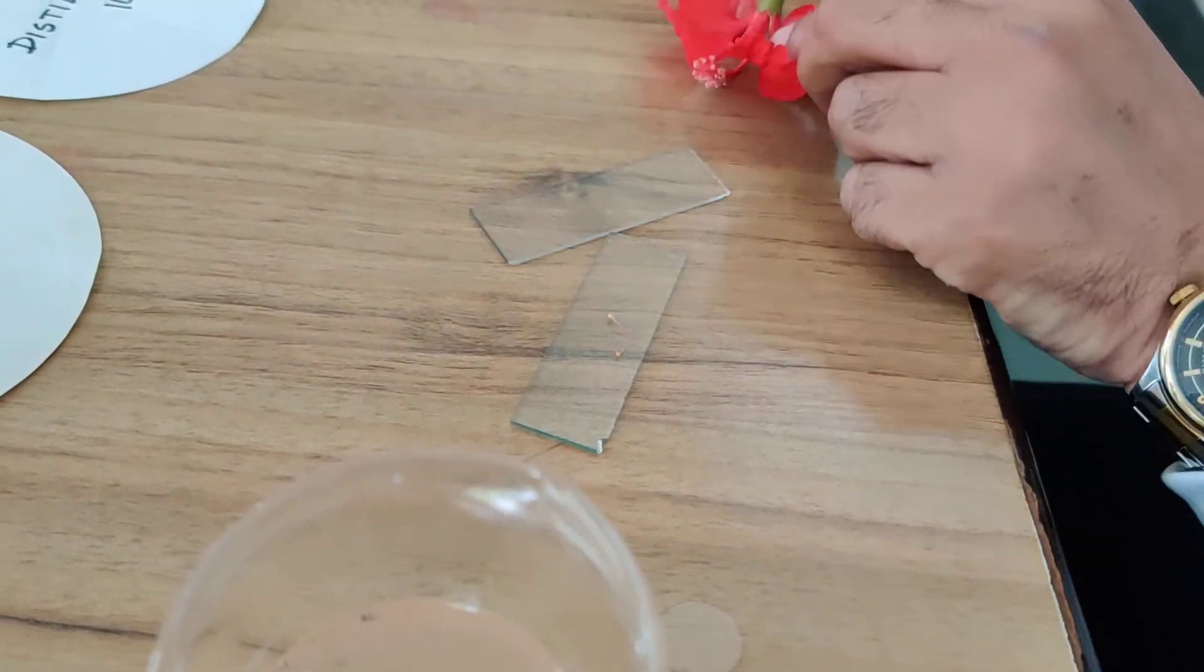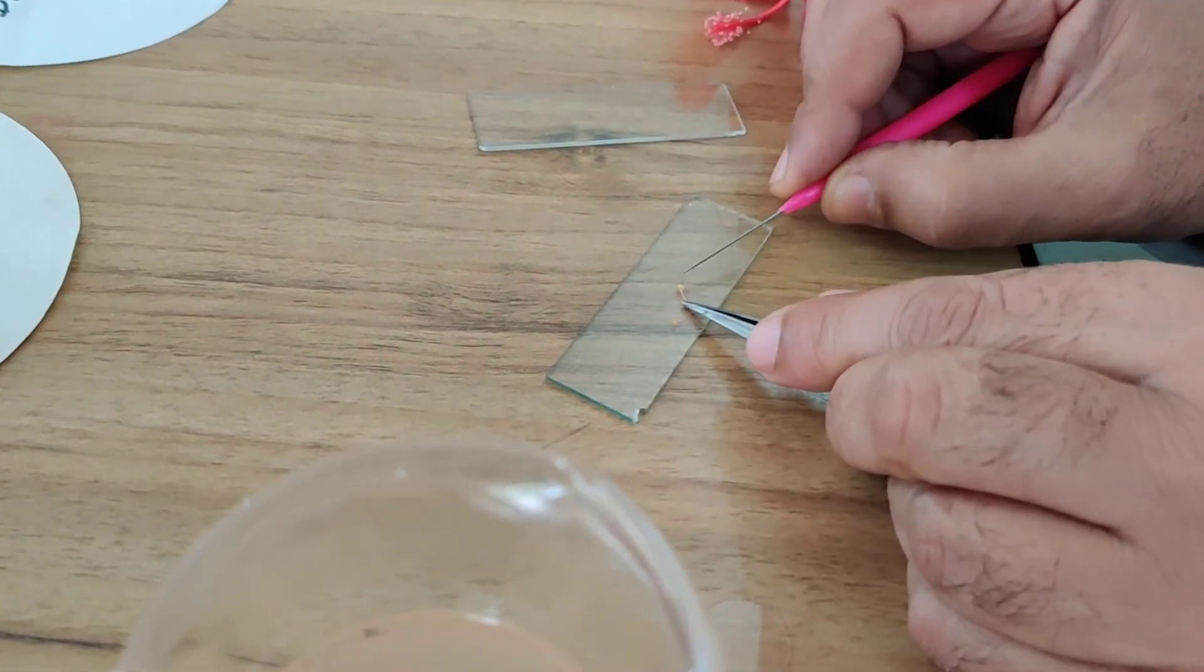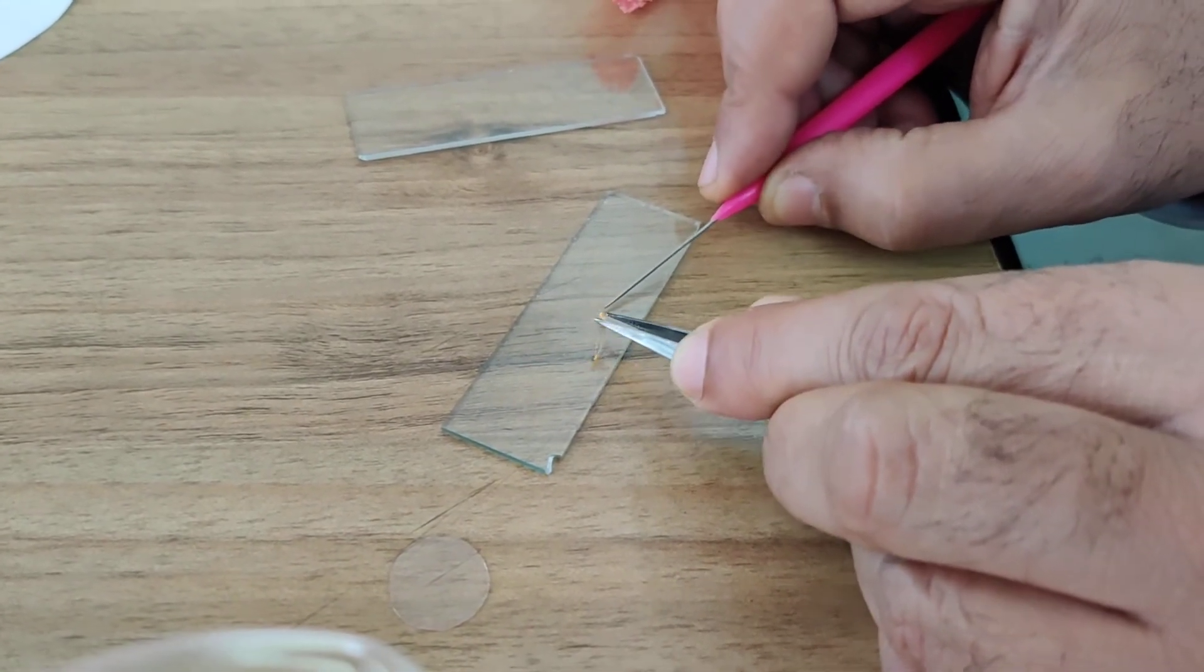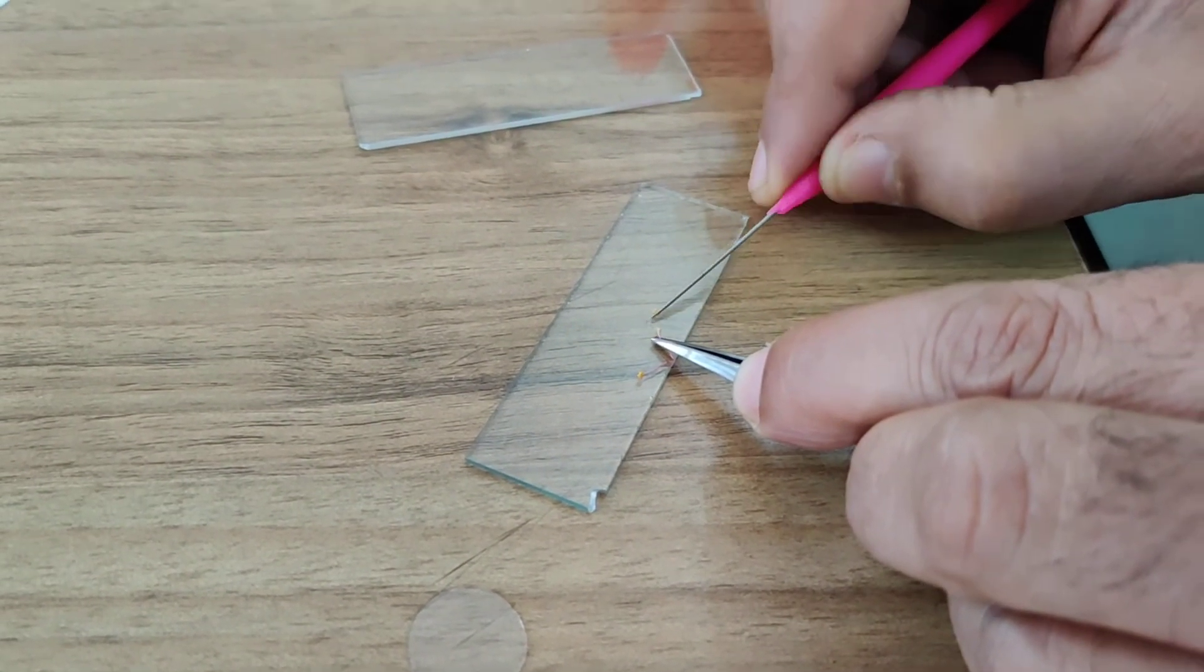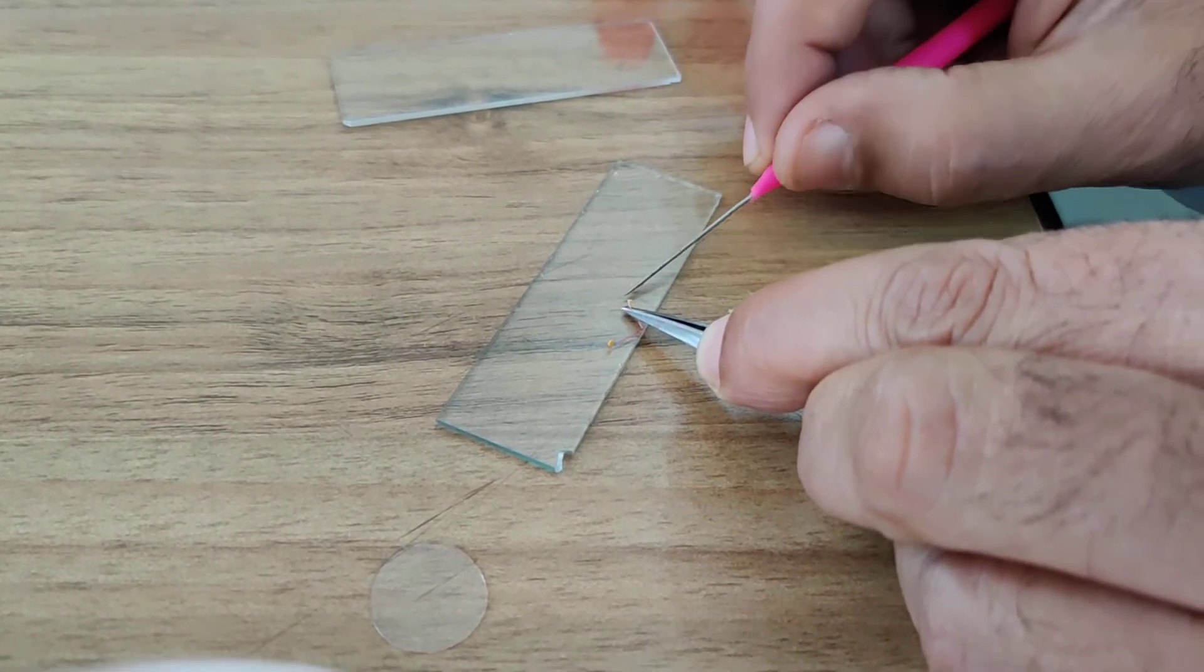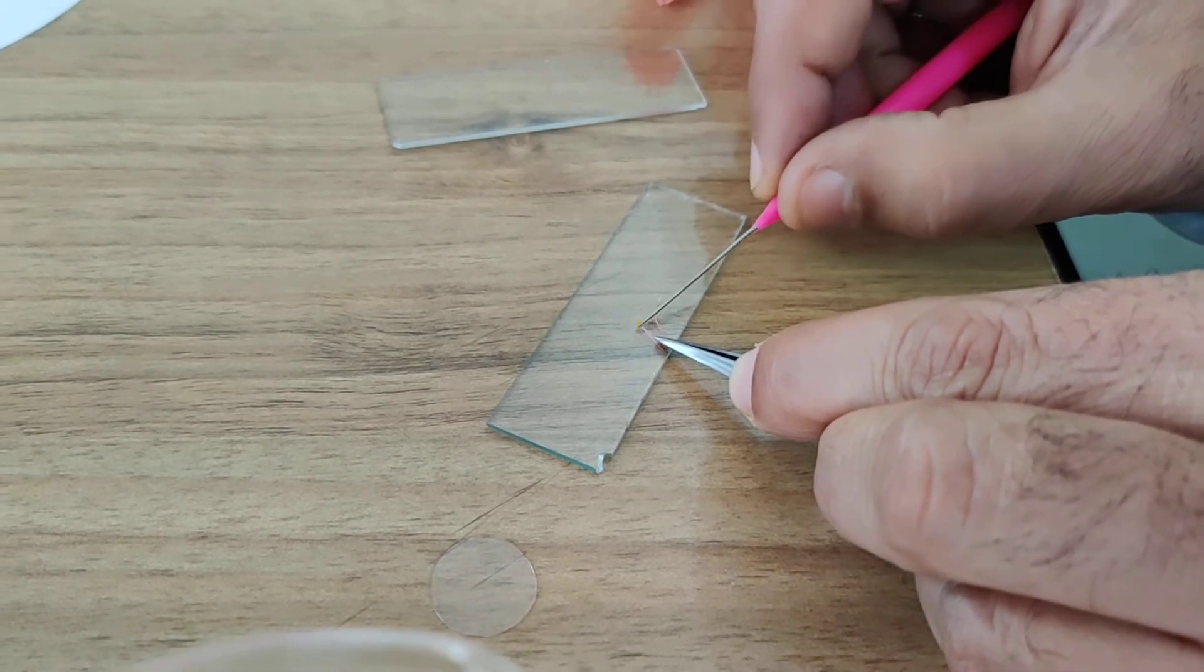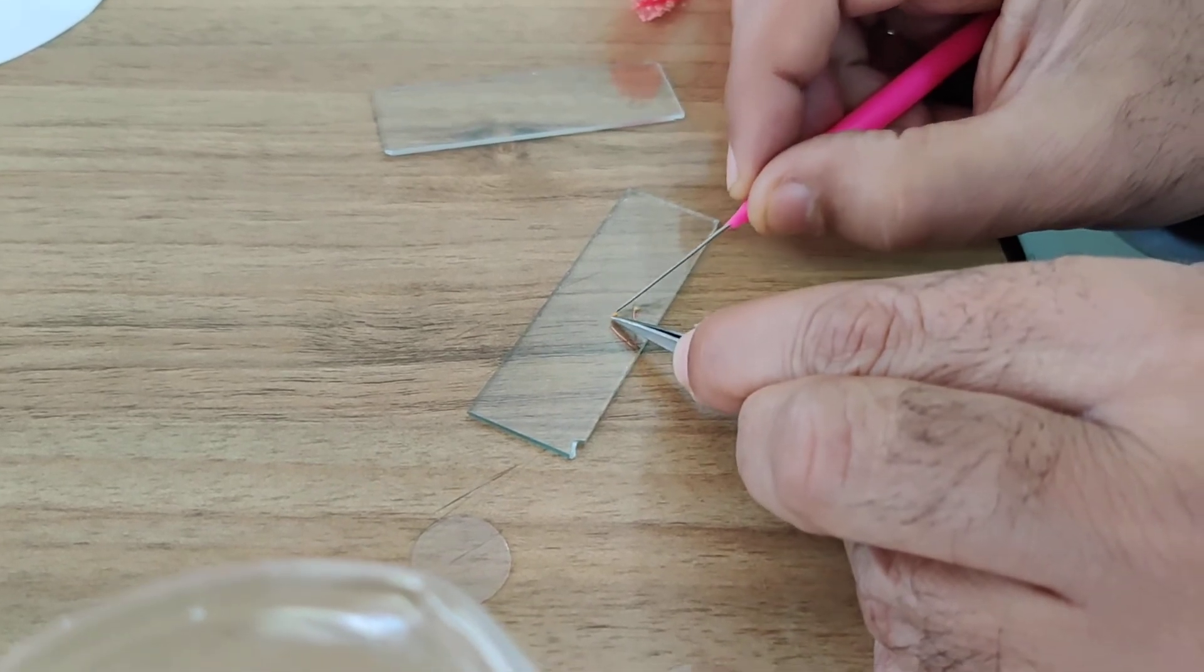From this anther we have to separate out the pollen grains very gently. The yellow dust of pollen grains is removed from this anther as well as from other anthers also.